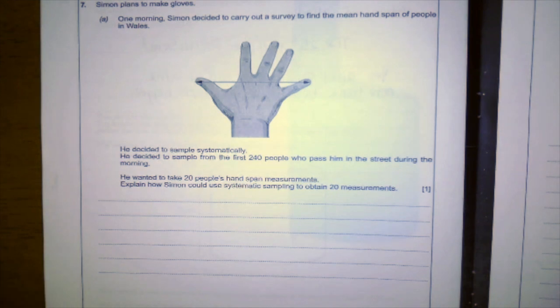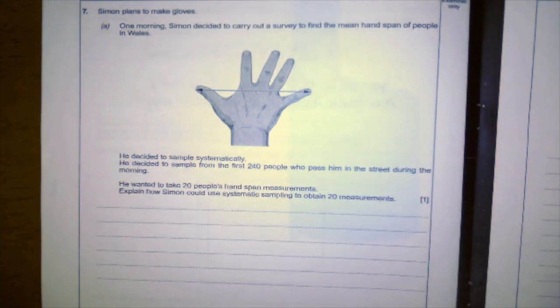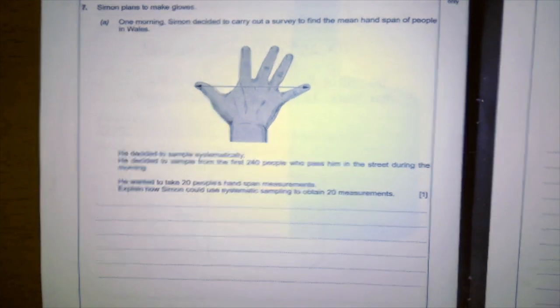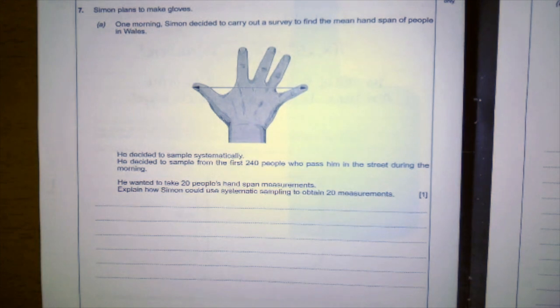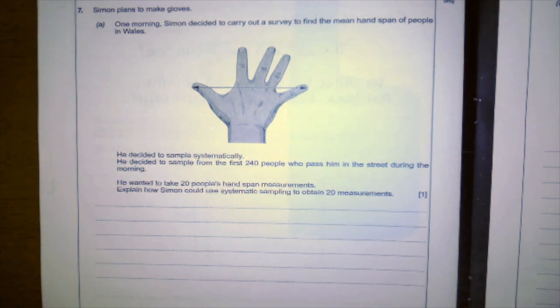One morning, Simon decided to carry out a survey to find the mean hand span of people in Wales. He decided to sample systematically. He decided to sample the first 240 people who pass him in the street during the morning. He wanted to take 20 people's hand span measurements. Explain how Simon could use systematic sampling to obtain 20 measurements.